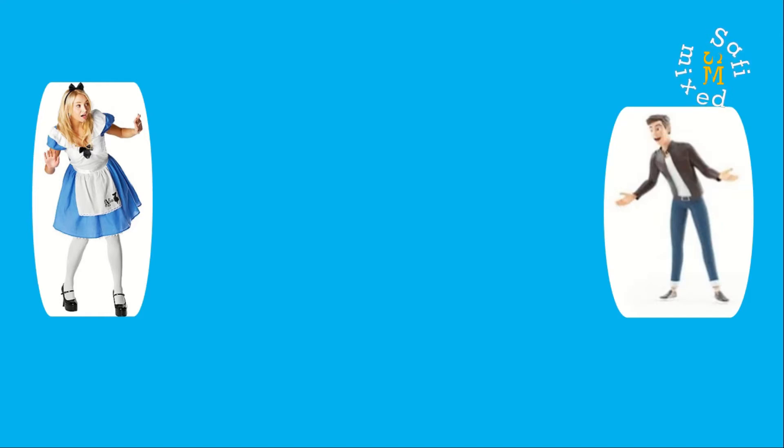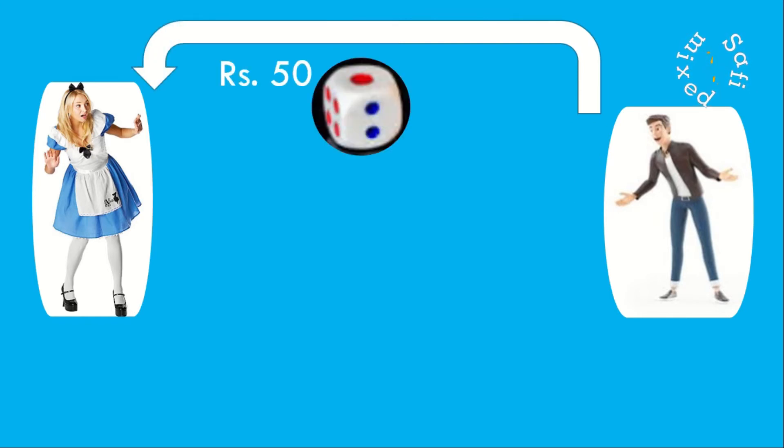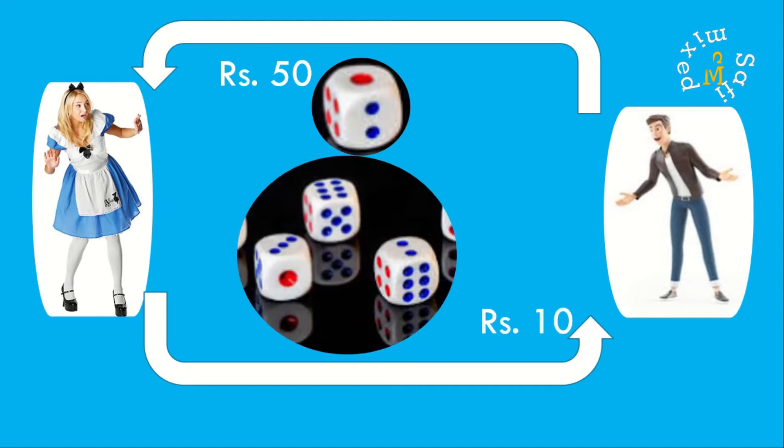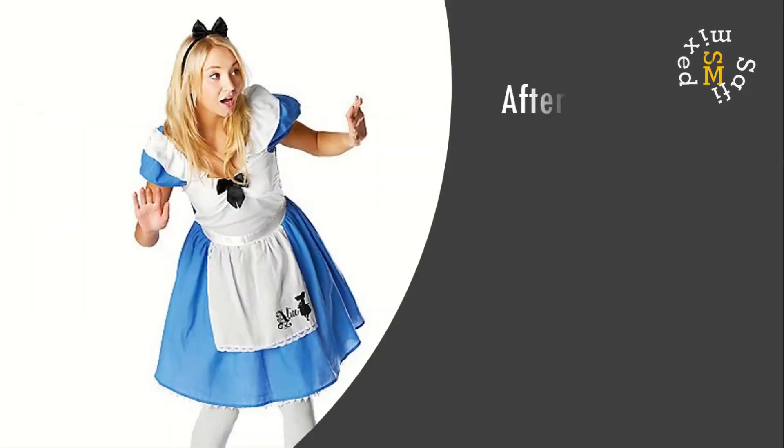Bob pays 50 rupees to Alice if a one comes up, irrespective of who is rolling the dice, and Alice pays 10 rupees to Bob for any other outcome. After 30 throws, a turn came where neither of them won a rupee.